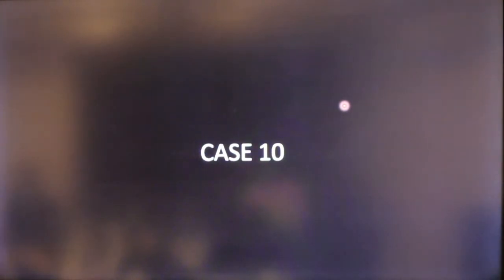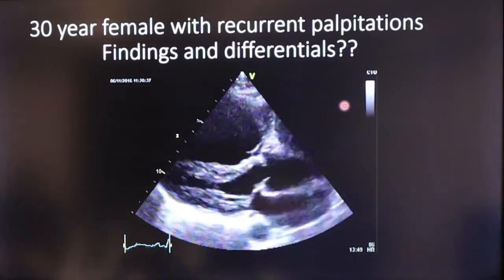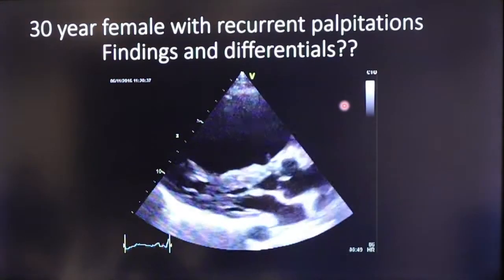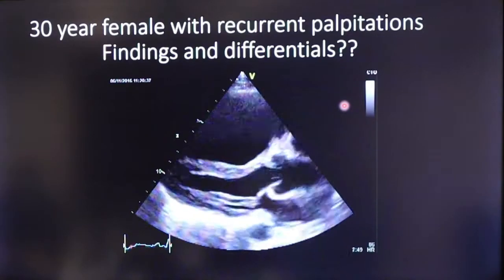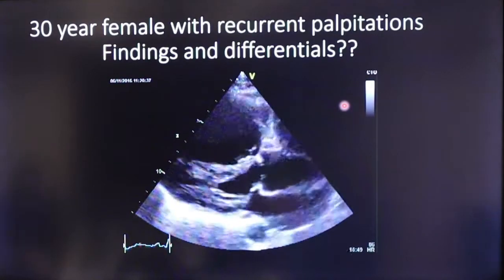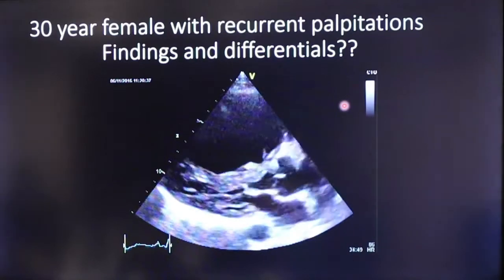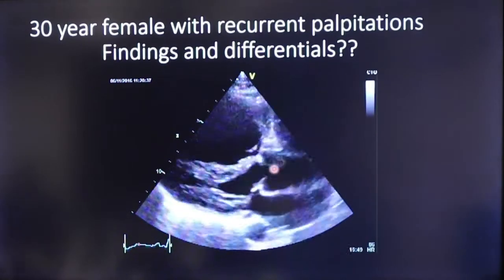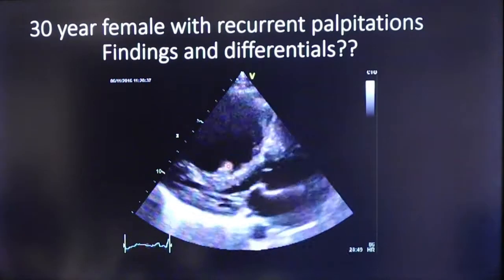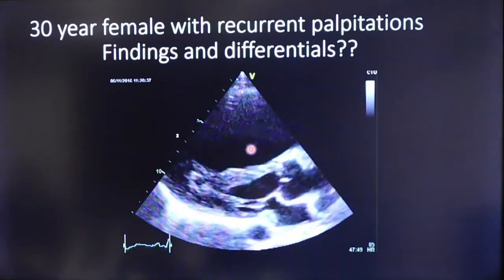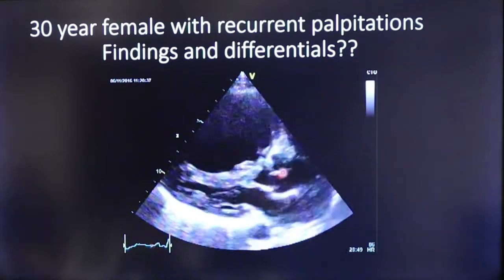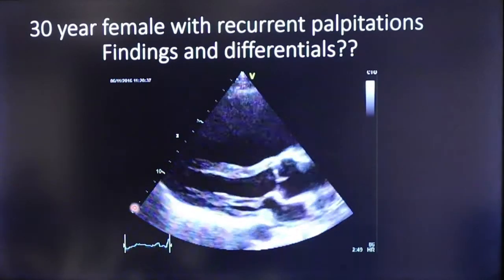Case 10: A 30-year-old female presenting to the clinic with recurrent palpitations. Echo was advised. The parasternal long axis view — which is the most important view — shows a hugely dilated right ventricle and RVOT. Normally the LV should be larger than the RVOT and RV, but this patient has significant right-sided dilation.